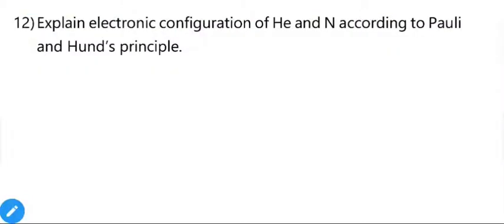Now you can try to find the electronic configurations of helium and nitrogen according to Pauli's exclusion principle and Hund's rule. If you find any confusion, feel free to ask.